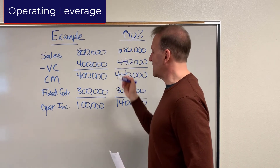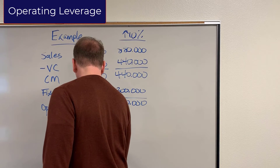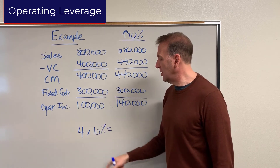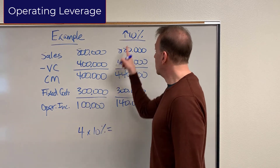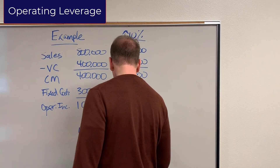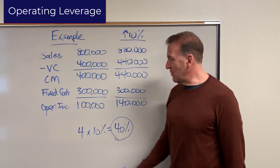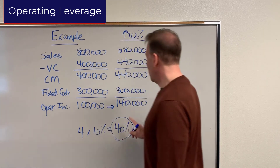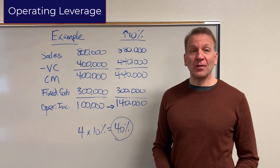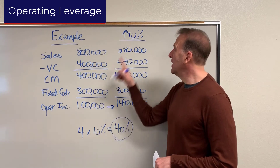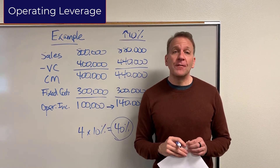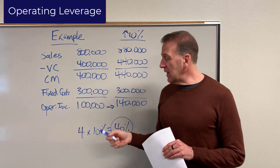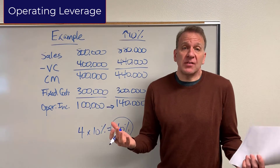Our change in sales was 10%. Our operating leverage factor was four — calculated as $400,000 divided by $100,000. Four times the 10% change in sales gives us a 40% change in operating income. And you can see that 40% of $100,000 is $40,000, which is exactly how much operating income increased. For high operating leverage companies — companies that have lots of fixed costs — they'll have a higher operating leverage factor, which is great if sales are going up.